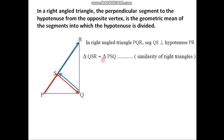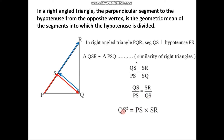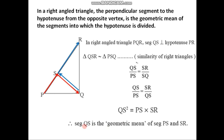Since sides of similar triangles are in proportion, taking side QS — its corresponding side is PS — we get QS/PS = SR/SQ. Rearranging: QS/PS = SR/QS. Cross multiplying gives QS × QS = PS × SR, that is, QS² = PS × SR. This means the square of QS equals the product of PS and SR.